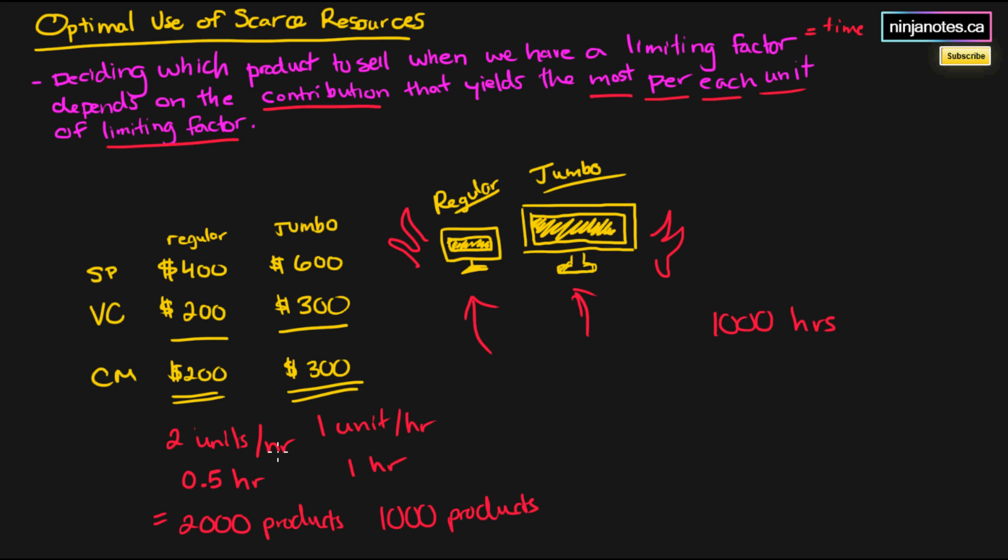It's either 2,000 products of the regular, or 1,000 of the jumbo. If we create 2,000 products, we're going to have a contribution margin of $400,000, while the jumbo product line would be $300,000.